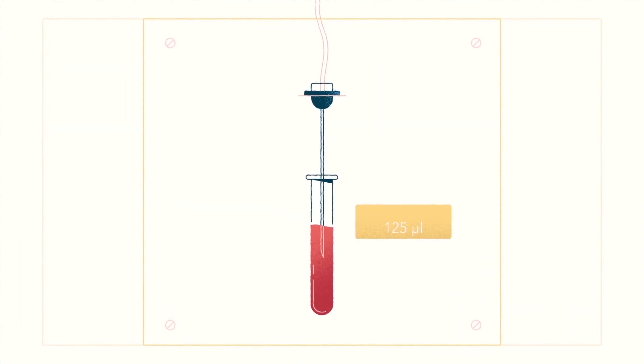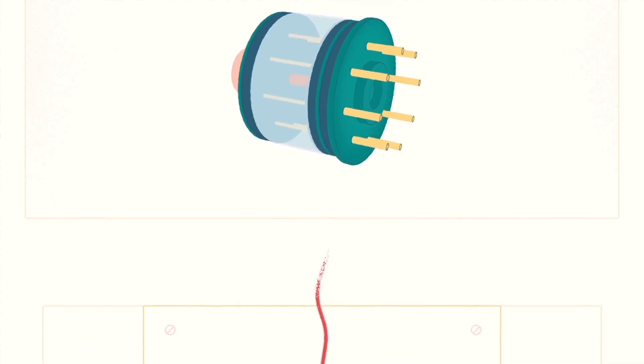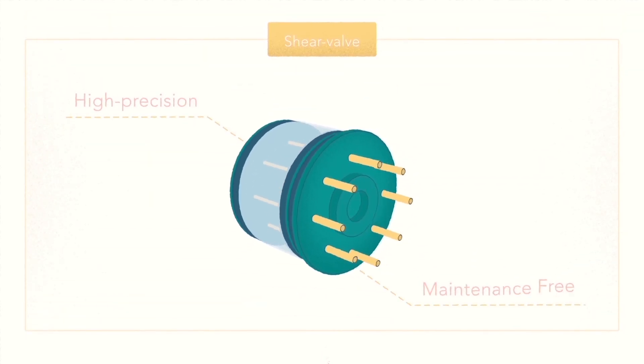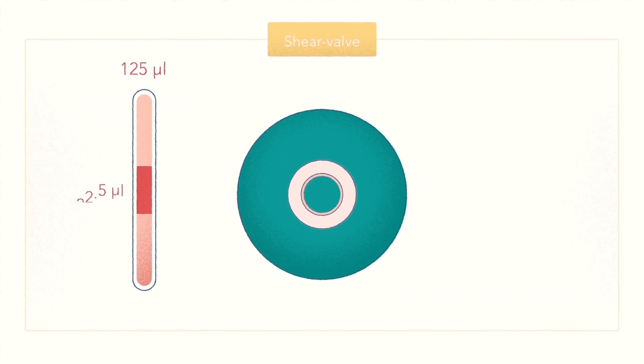The blood analysis is started by aspirating 125 microliters of blood sample that is transferred to the shear valve. The high-precision, maintenance-free shear valve cuts a precision volume of 22.5 microliters that is used for analysis.